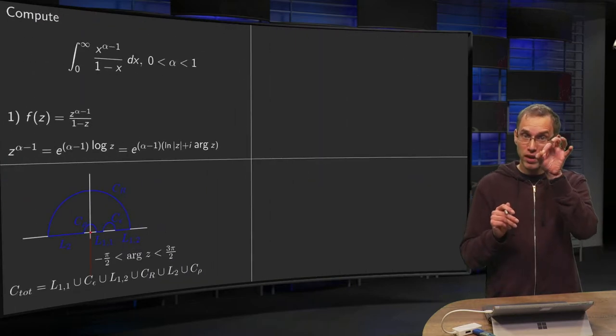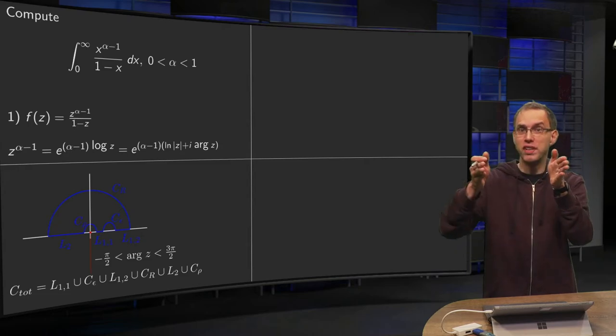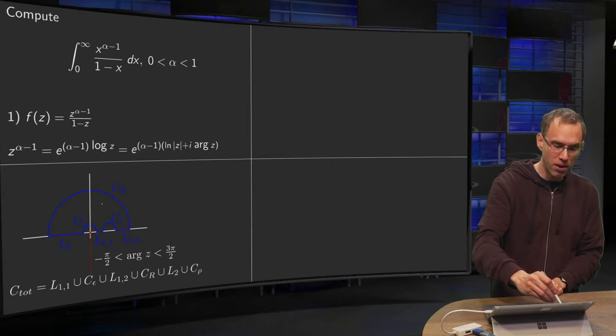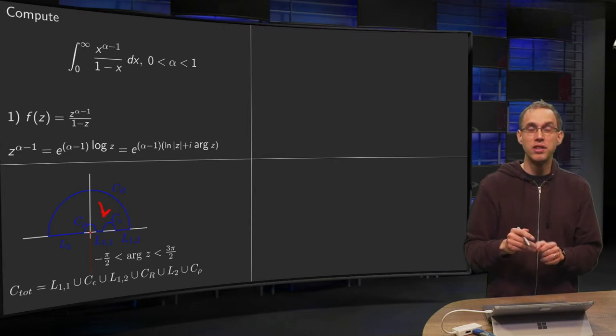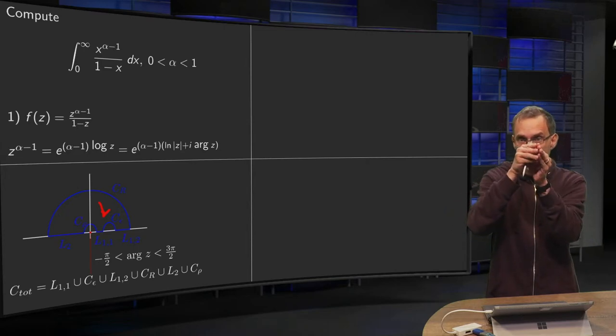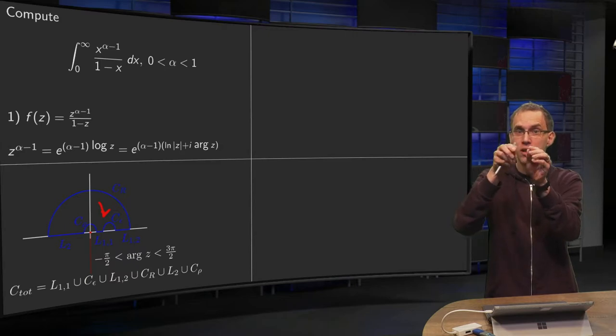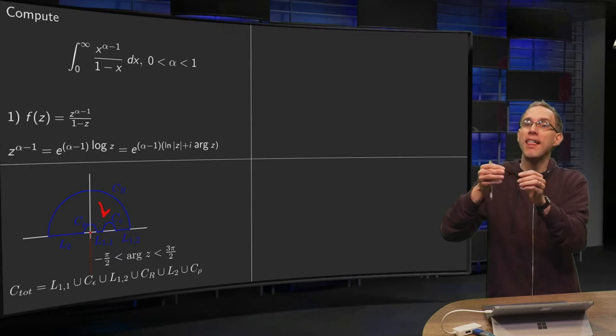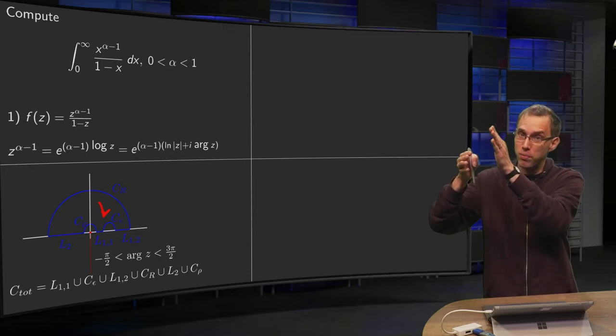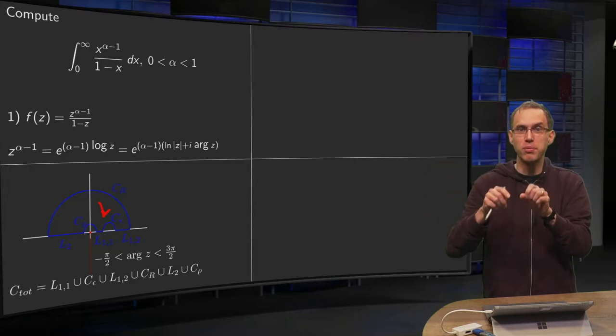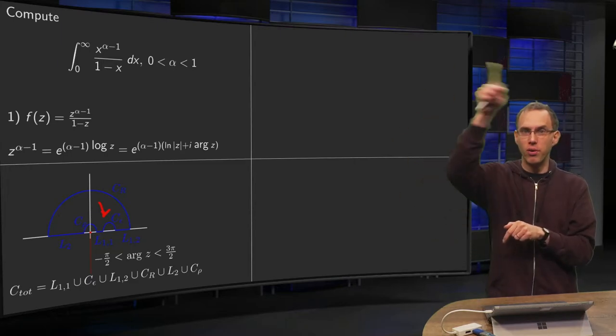The problem is at 1. You want to integrate from 0 to infinity, that's the integral you want to obtain, but at 1 you have this problem. So you have to go around it with this c epsilon. So how do we form our contour? We start with L11 to go from rho to 1 minus epsilon. So say from 0 to 1 in the limit later on. Then we have our L12 goes from 1 plus epsilon up to r. And then we cut out the c epsilon, the small circle, then we go around.